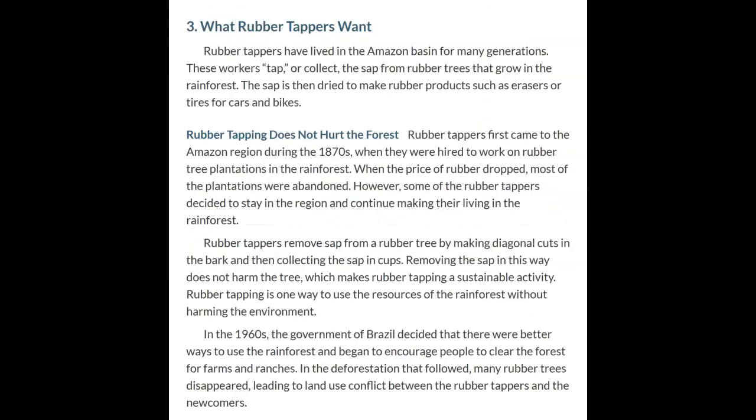What the rubber tappers want. Rubber tappers have lived in the Amazon basin for many generations. These workers tap — or collect the sap from — rubber trees that grow in the rainforest. The sap is then dried to make rubber products such as erasers or tires. Rubber tappers first came to the Amazon region during the 1870s when they were hired to work on rubber tree plantations. When the price of rubber dropped, most plantations were abandoned, but some tappers decided to stay and continue making their living in the rainforest.